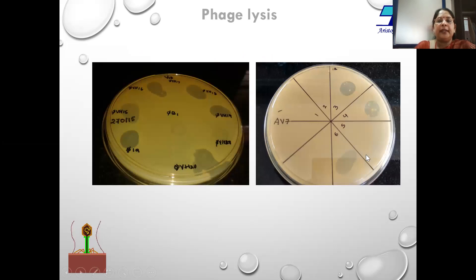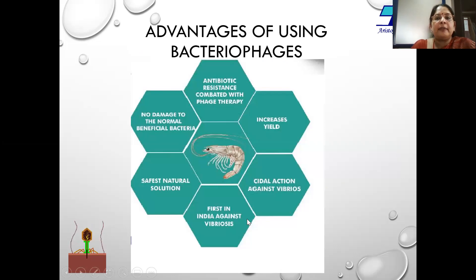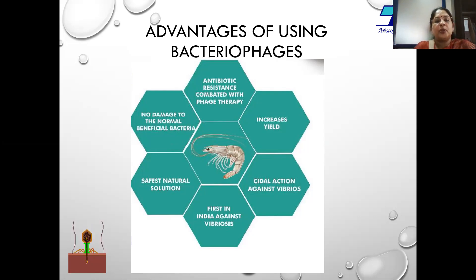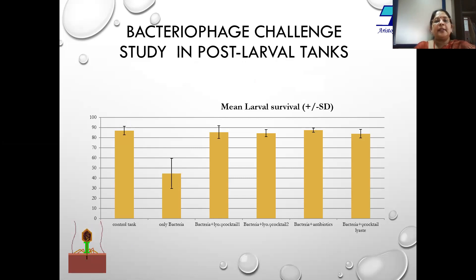Here you can see that on a lawn of bacteria, when you spot a bacteriophage, it clearly eats up the bacterium — this is how we test in the lab to see the efficacy of bacteriophages. The advantages of using bacteriophages: they can kill bacteria that are resistant to antibiotics; they produce a bactericidal action by lysing the bacteria; they are the safest natural solution with no chemical added; and unlike antibiotics, they do not damage normal beneficial or probiotic bacteria — bacteriophages specifically target and kill vibrios or any other targeted bacteria.